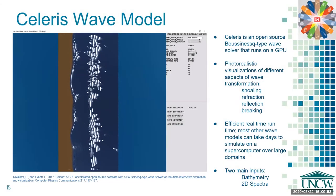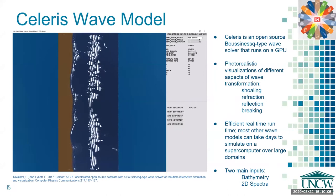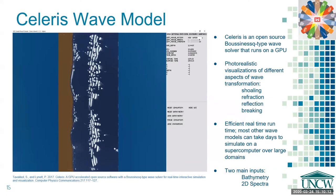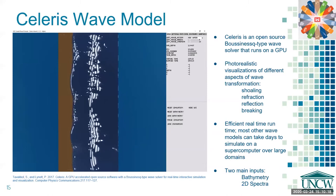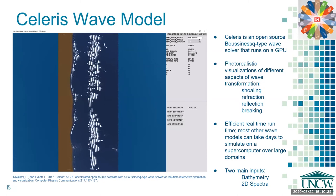The wave model we chose to run this inversion process with is the Solaris wave model. It's an open-source Boussinesq-type wave solver that runs on a GPU. It produces photorealistic visualizations of different aspects of wave transformation like shoaling, refraction, reflection, and breaking. In addition, it has extremely efficient real-time runtime, which is very significant because most other wave models of this type can take days to simulate on a supercomputer. For the Solaris model to run, we need two main inputs: the bathymetry for the waves to run over, and the wave conditions at the offshore boundary for the waves to propagate from.